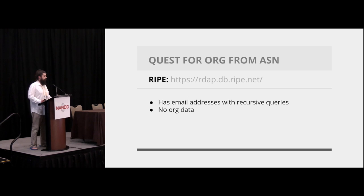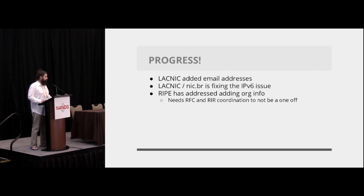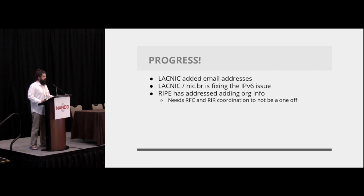RIPE has email addresses but requires recursive queries — they give you a list of handles and then you have to query again if you want information on the handles. They also have no organization data. Since we started this, LACNIC within a week had rolled tested code, pushed it to beta, and then to production to add email addresses — except for the v6 server in Brazil. RIPE said they will add organization info, but it's not completely standardized yet, so they want to wait and not start another one-off.